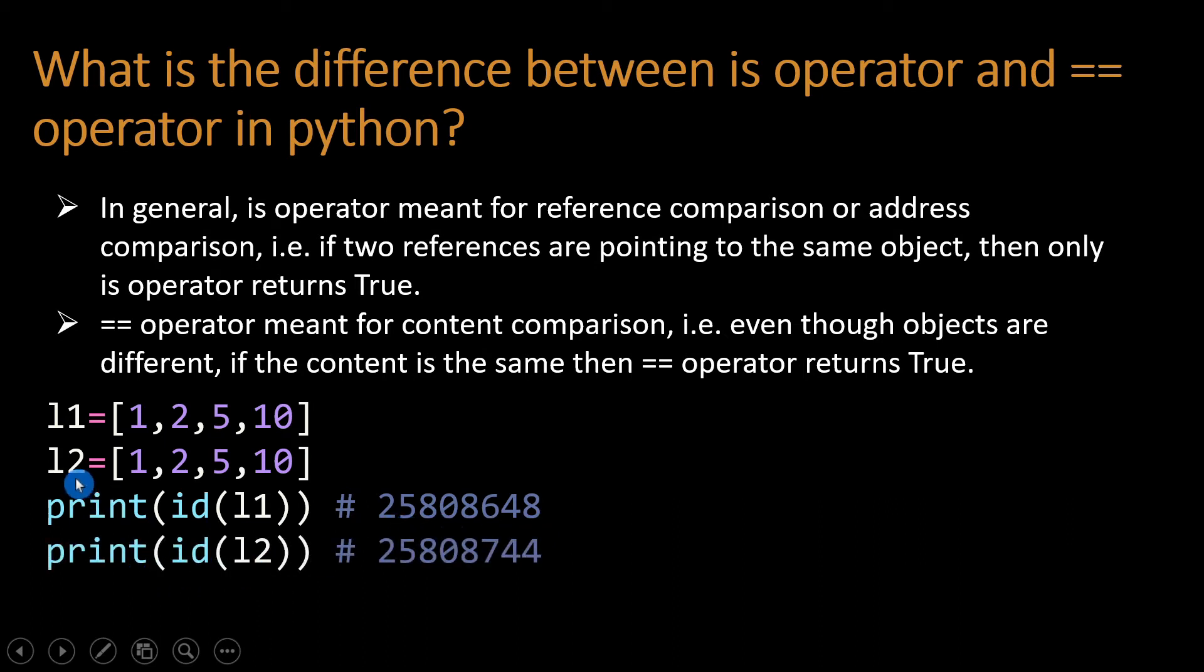You see the two addresses are different. So if I compare l1 is l2, we got the output False. The two data are the same, meaning the content is the same, but the address is different. That's why we got the output False.